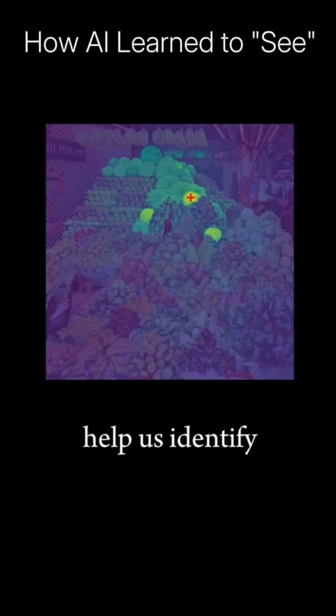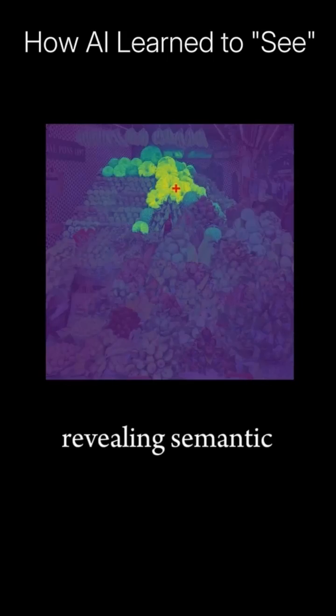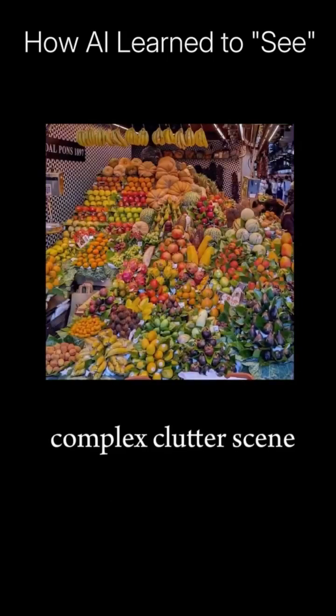Good features help us identify which regions of the image are similar to the red cross, revealing semantic structures even in a complex cluttered scene.